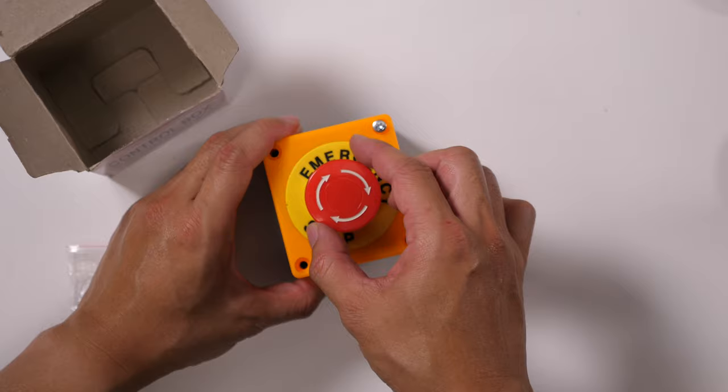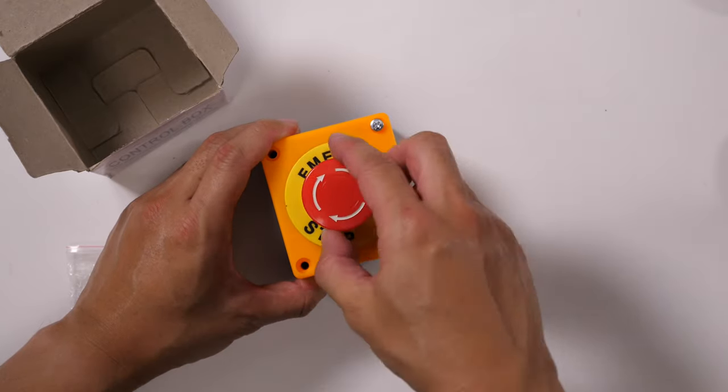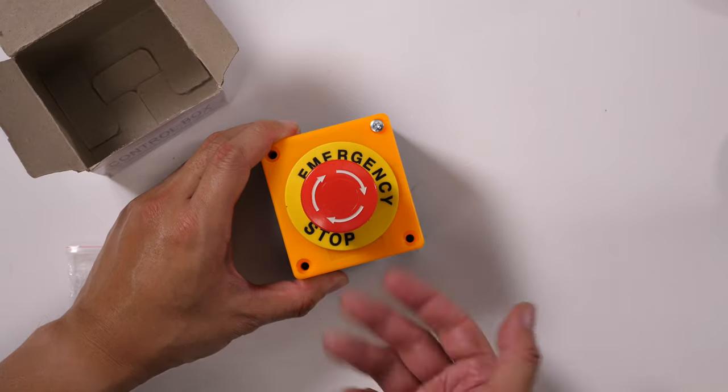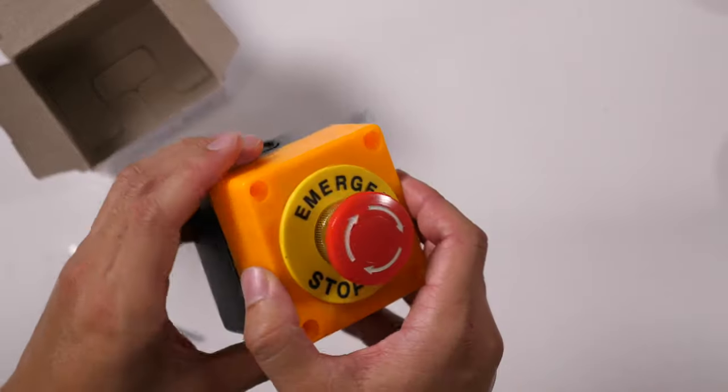You could hit it like that to stop, twist to pop it up. Stop, that pops it up again and unlatches it. That's the emergency stop button.